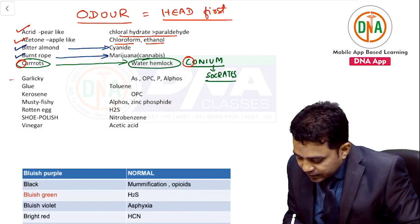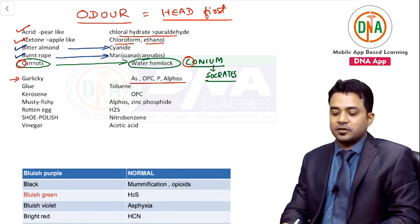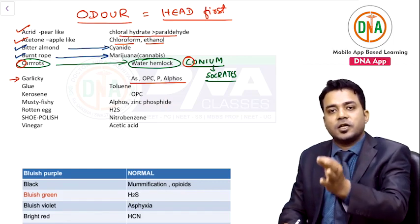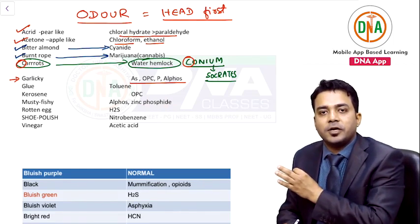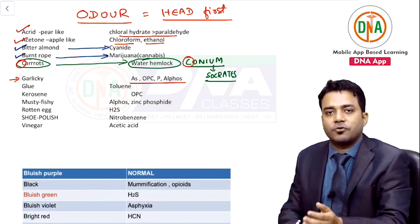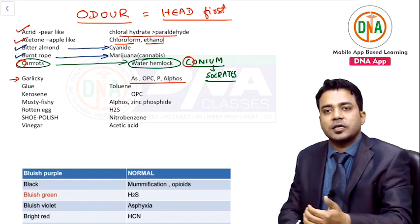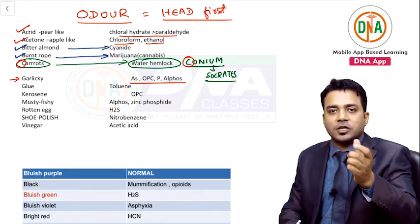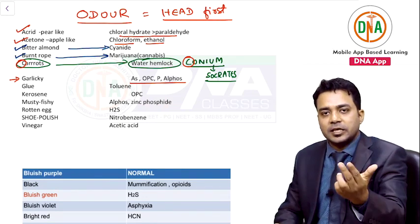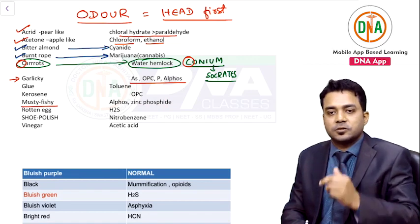Garlicky odor is due to four poisons: arsenic, organophosphorus compounds (OPCs), phosphorus, and alphos/cellphos tablets. Alphos or cellphos poisoning has two types of odor: one is garlicky and second is musty fishy. Garlic smell by four poisons — arsenic, organophosphorus compounds, phosphorus, and cellphos/alphos tablets.